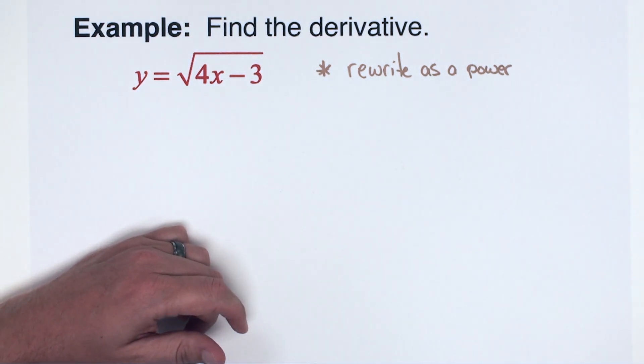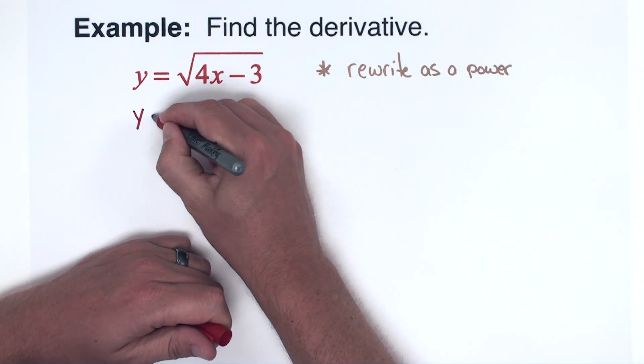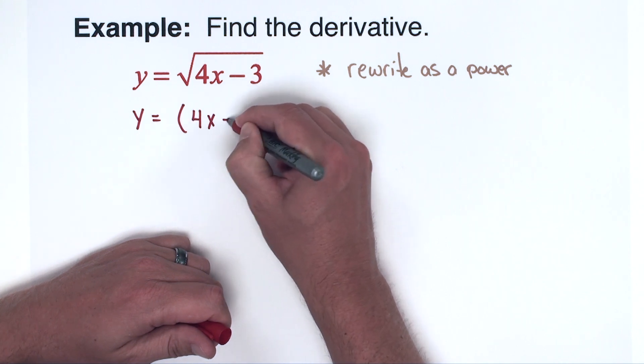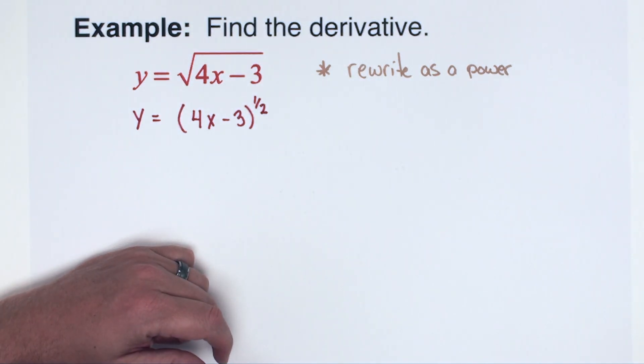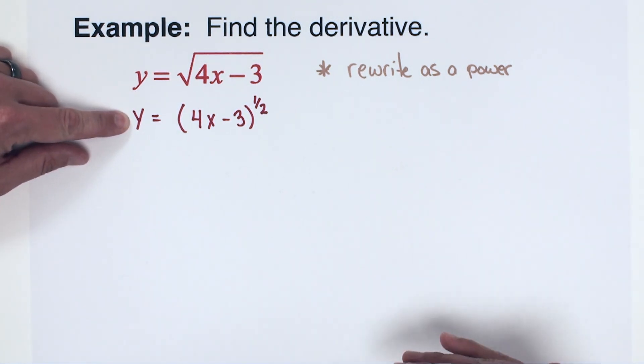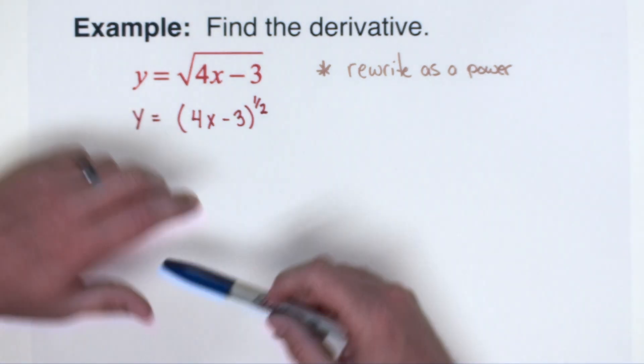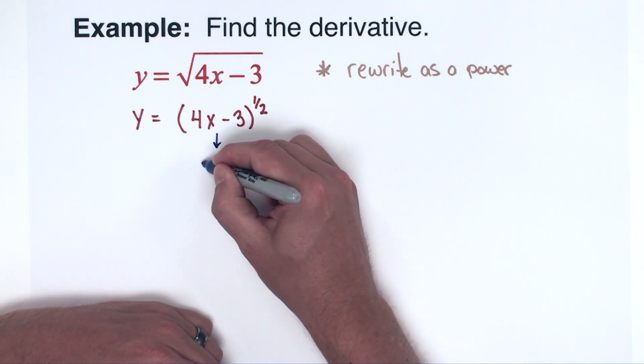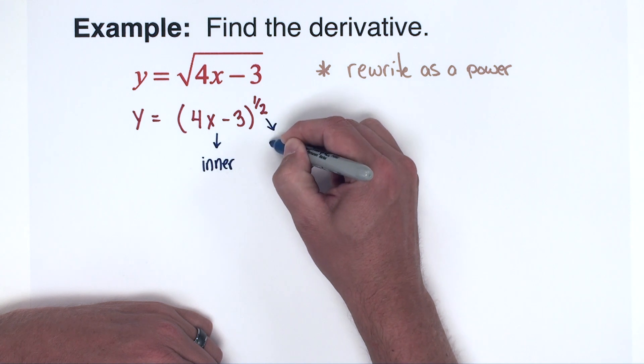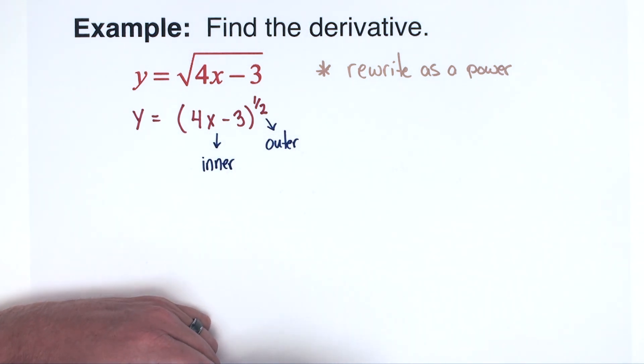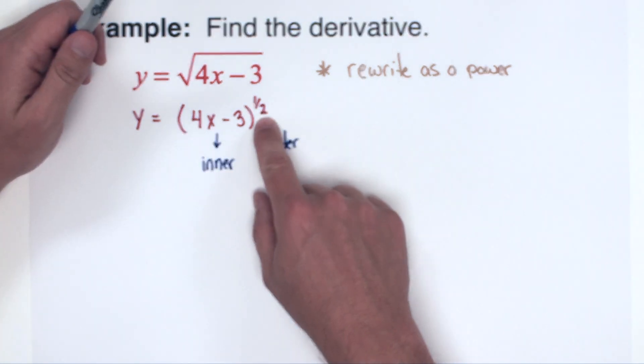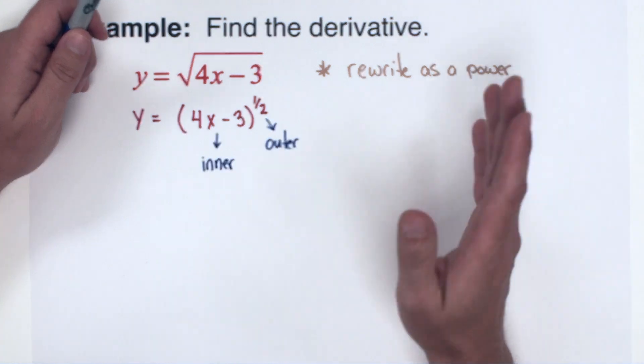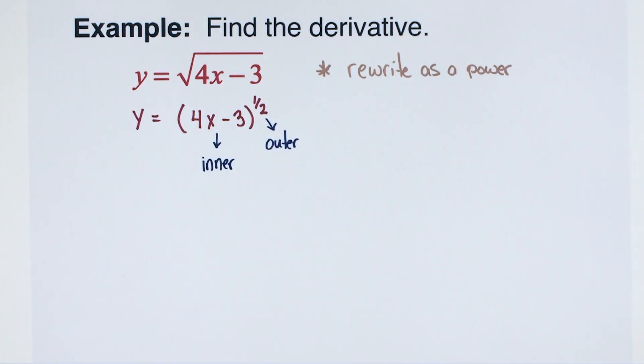So before you do any calculus, the first step is just to rewrite this function. So this is going to become y equals the quantity 4x minus 3 and a square root is a one half power. After I've done that step, now it's pretty clear that the 4x minus 3 is the inner piece and the one half is the outer. This is simply like a power chain. The only difference is that the power is a rational number, it's a fraction, so depending on your comfort level with that might dictate how easy this is.